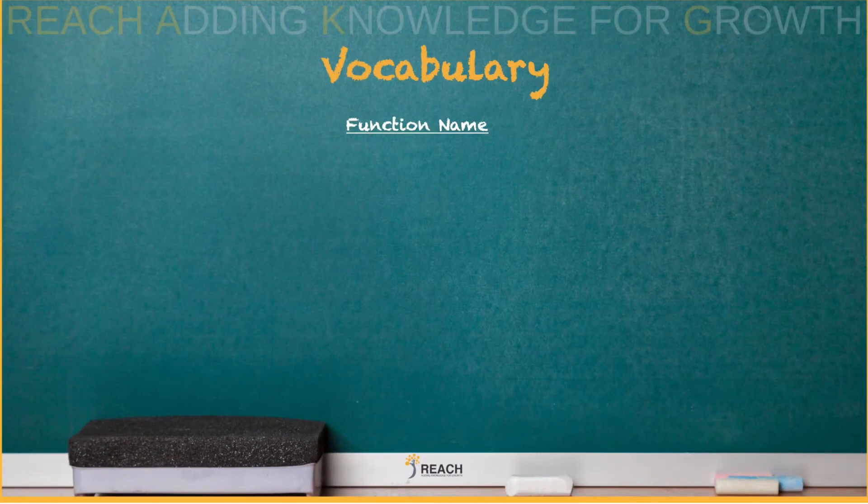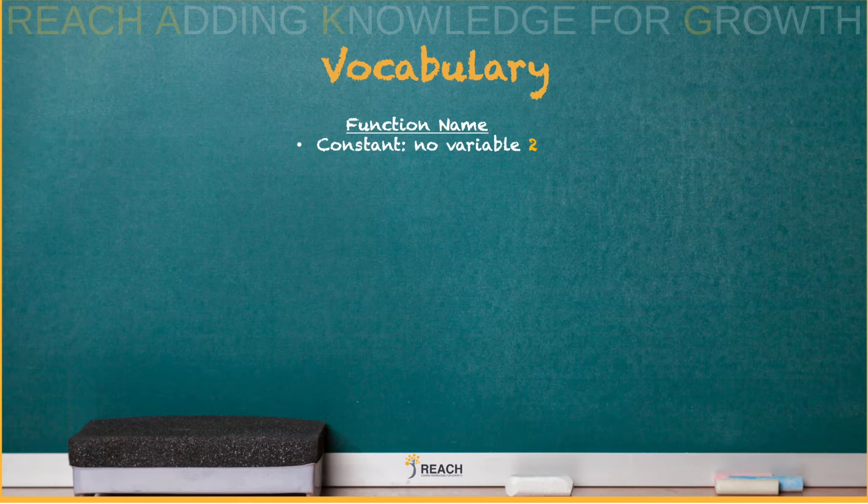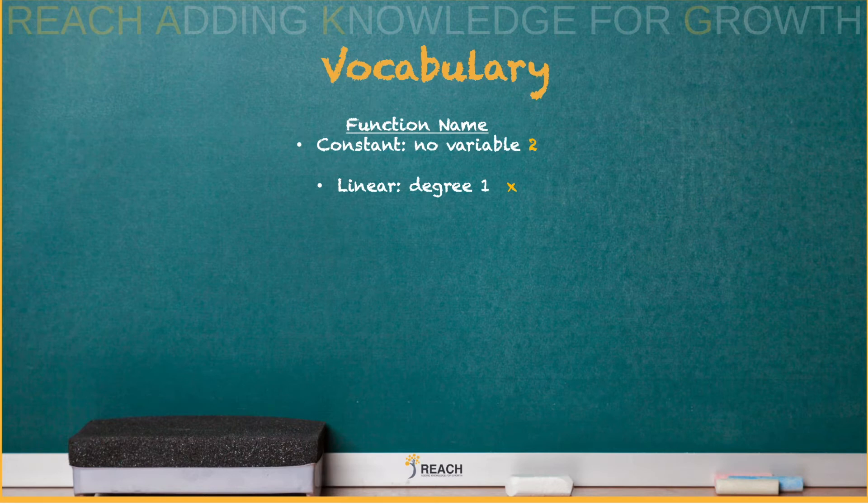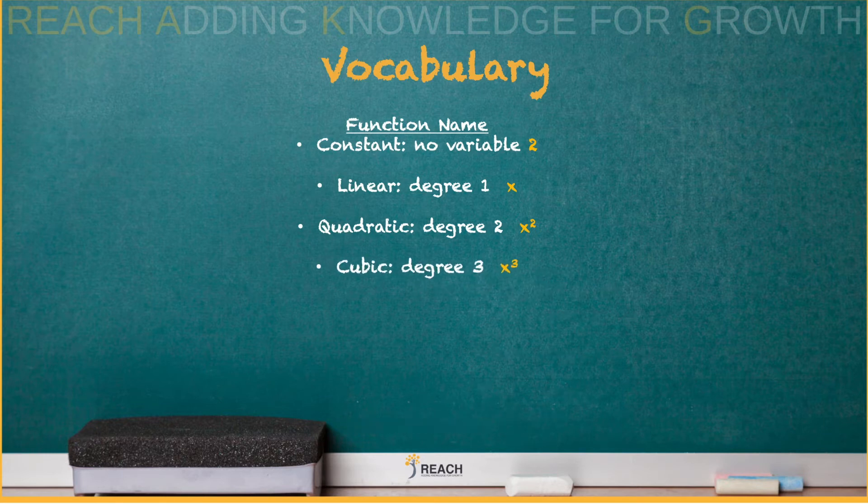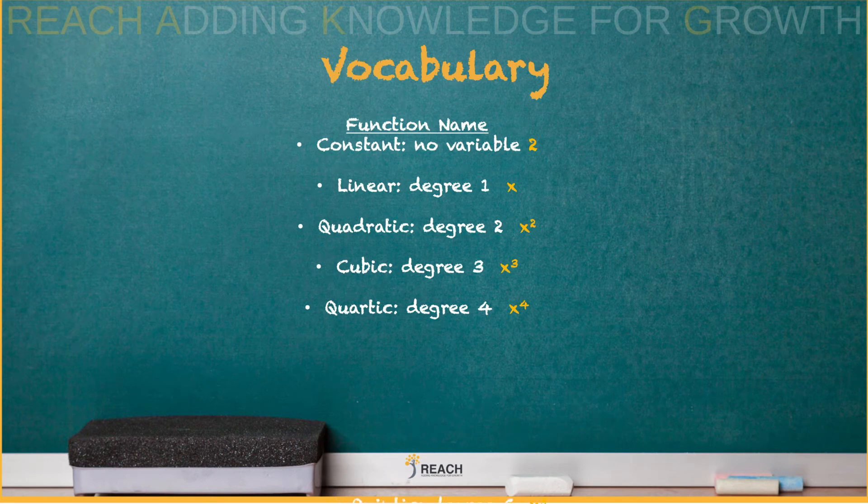Vocabulary by the function name. Constant, no variable. Linear, X to the first power. Quadratic, X to the second power. Cubic, X to the third power. Quartic, X to the fourth power. Quintic, X to the fifth. Those are the function names.